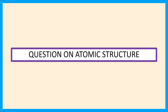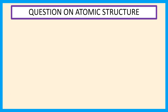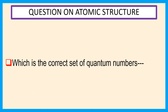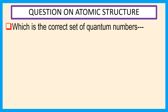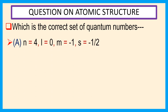Welcome, everyone. Question on atomic structure: which is the correct set of quantum numbers? Choice a: n is equal to 4, l is equal to 0, m is equal to minus 1, and s is equal to minus half.